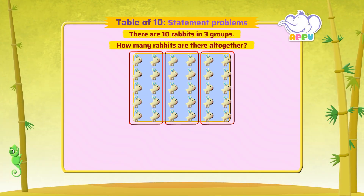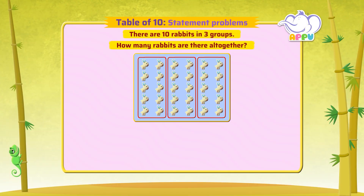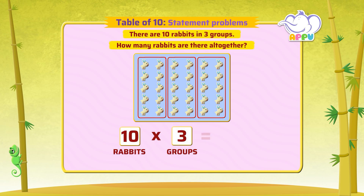There are ten rabbits in three groups. How many rabbits are there all together? To find the total number of rabbits, we multiply them. Ten times three equals thirty. There are thirty rabbits in all.